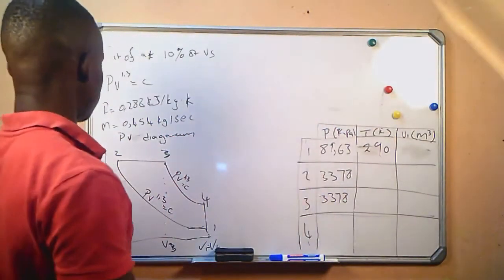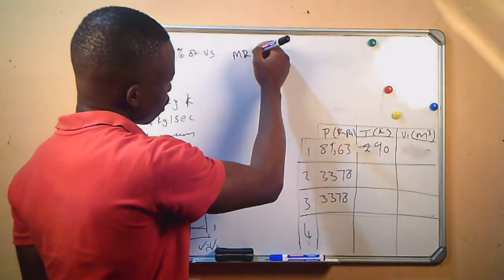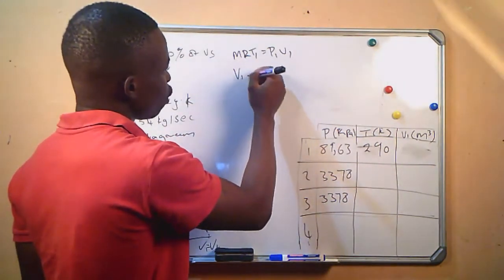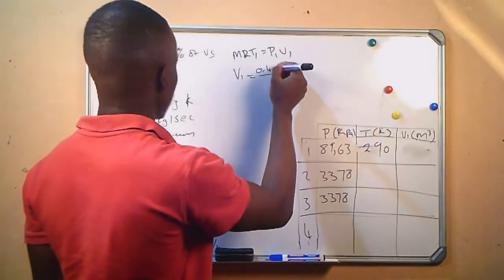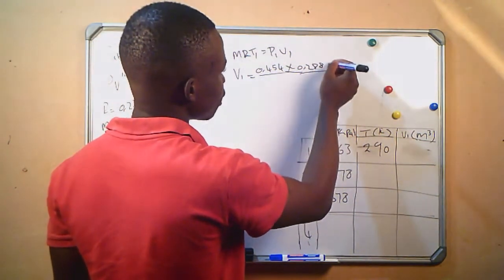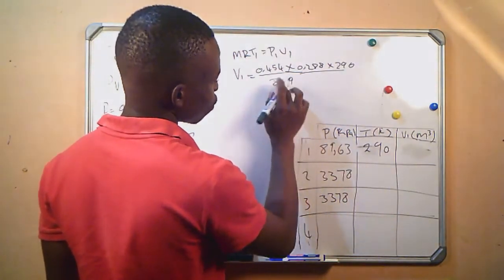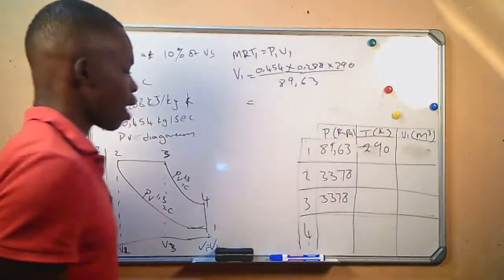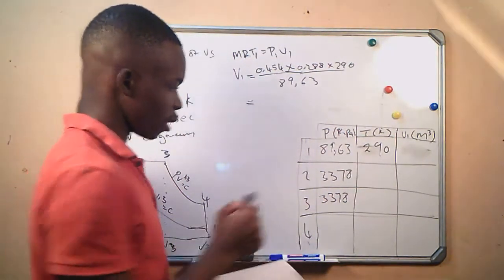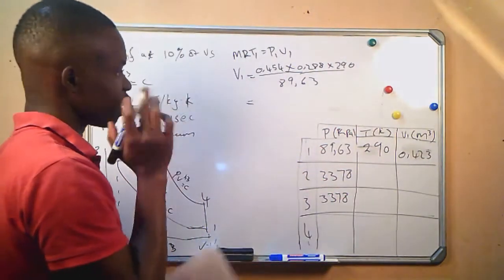We start with what we are given. The first thing we can calculate is V1 using the ideal gas law PV = MRT. V1 equals M times R times T1 divided by P1. Substituting: M = 0.454, R = 0.288, T1 = 290 K, and P1 = 89.63 kilopascal, which gives us V1 = 0.423 cubic meters.